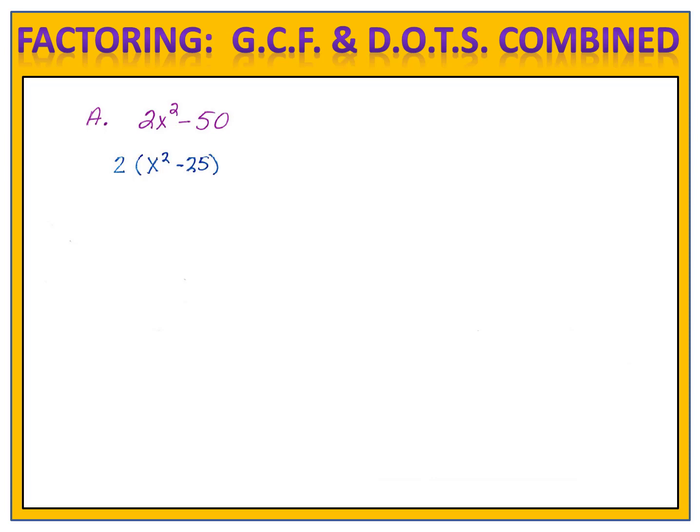But when we look at the parenthesis, we notice that we actually have something very special. We have a difference of two perfect squares. We can factor that difference of two perfect squares, knowing that x times x gives me x squared, and 5 times 5 gives me 25, into the binomials x plus 5 times x minus 5. Don't forget to bring down the 2, which was the greatest common factor, and now you have factored that binomial completely.